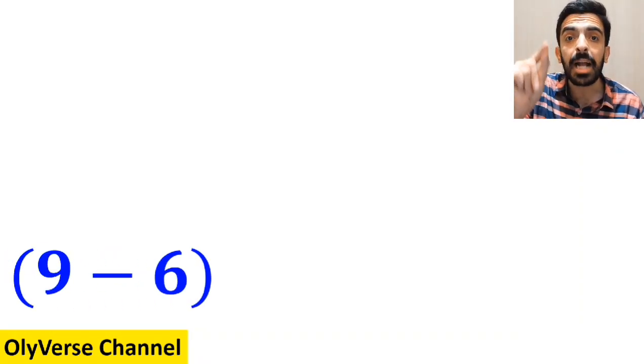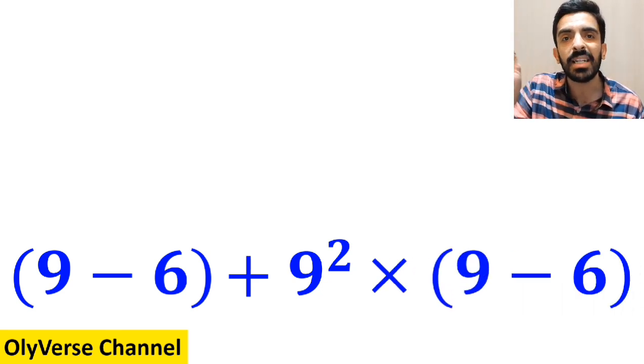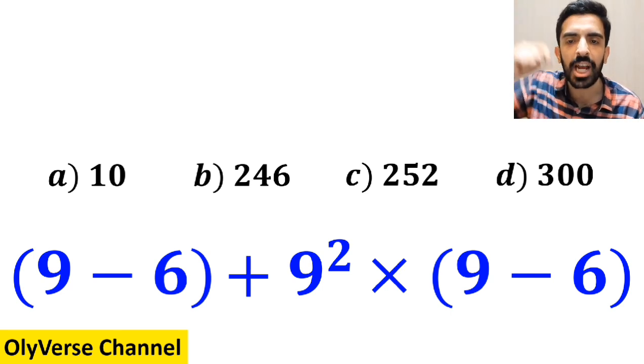What is the value of the expression (9 - 6) + 9² × (9 - 6)? Which option do you think is the correct answer to this question?